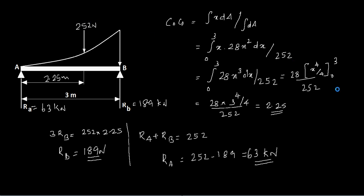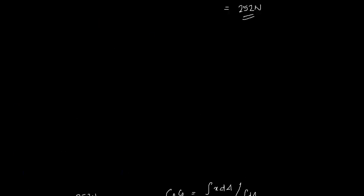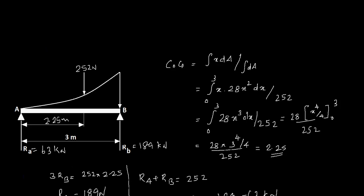So you have RA = 63 and RB = 189. Wait, is it kilo Newton or Newton? It's Newton, not kilo Newton. It's just 189 Newtons and 63 Newtons.